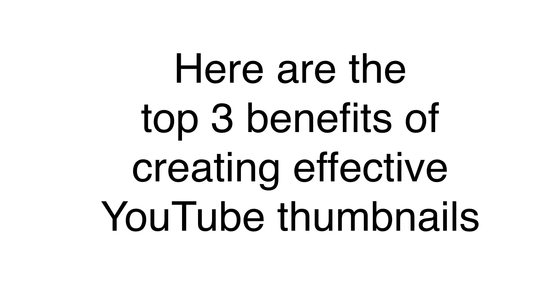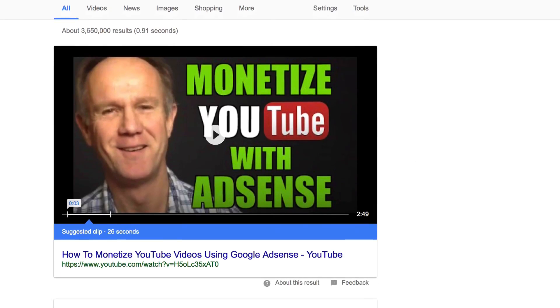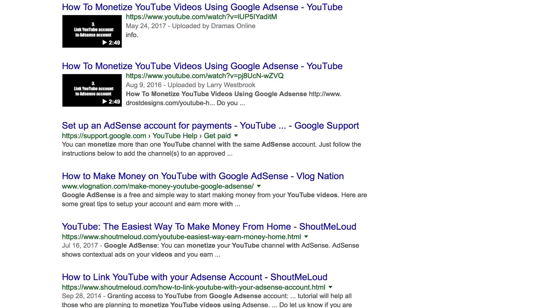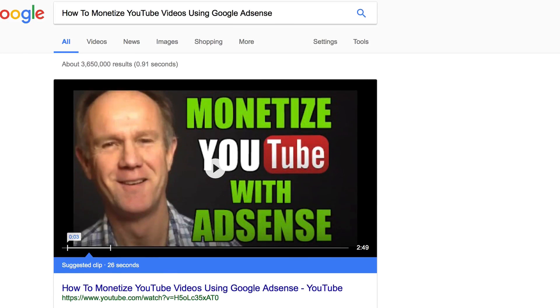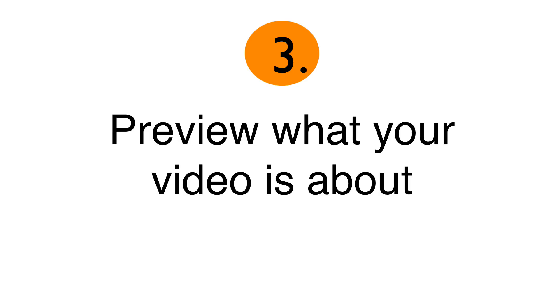Here are the top three benefits of creating effective YouTube thumbnails. Number one: stand out in search engine listings. If your video ranks on the first page of Google, your thumbnail image will stand out amongst all the text-based listings of websites. Number two: motivate viewers to click through to your video. An attractive thumbnail image will get the first click and keep viewers watching. Number three: preview what your video is about. Since thumbnail previews last for three seconds, it provides a snapshot of what your video is all about.